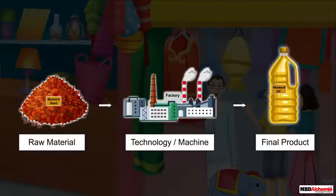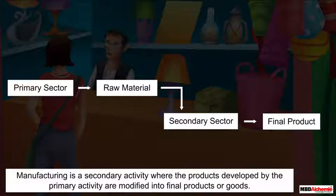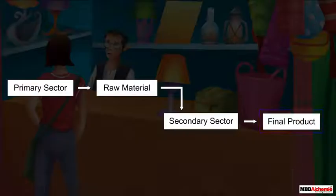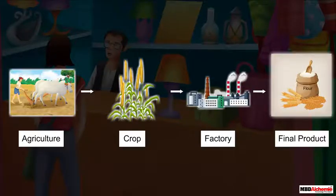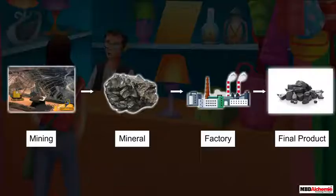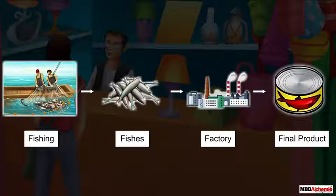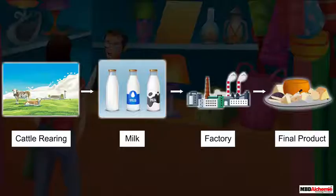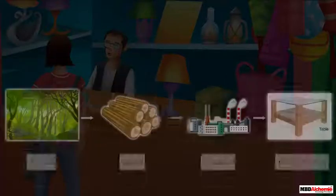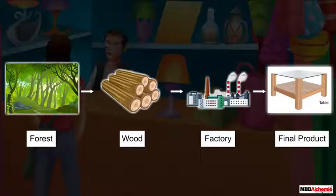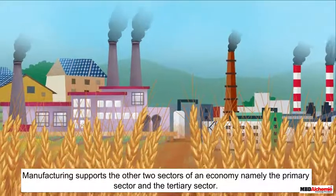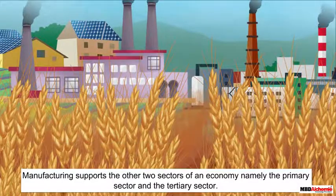Most of the production in manufacturing industries is done by machines using technology. Manufacturing is a secondary activity where the products developed by the primary activity are modified into final products or goods. For example, crops from farming, minerals from mining, fish from fishing, milk from cattle rearing, and wood from forestry are turned into products as per our requirements.